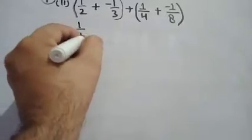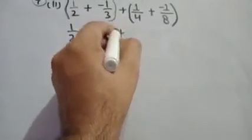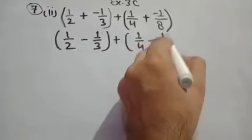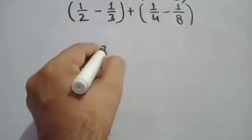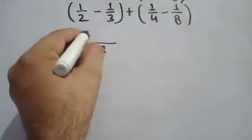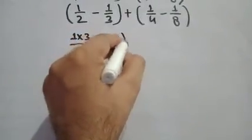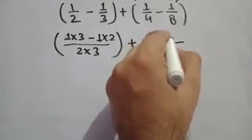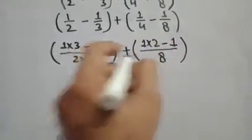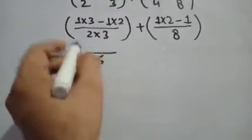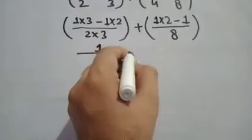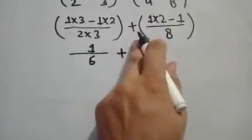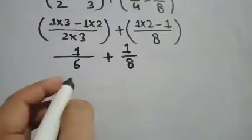1/2 plus minus 1/3 plus 1/4 plus minus 1/8. Now LCM of 2 and 3: 1 times 3 minus 1 times 2. Plus here the LCM is 8: 1 times 2 minus 1.